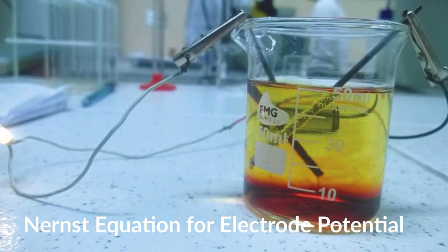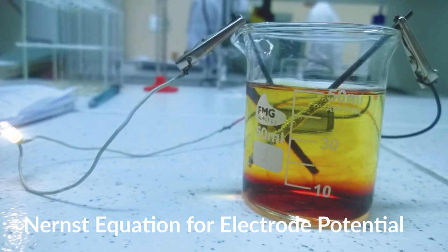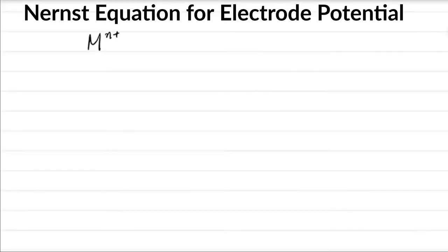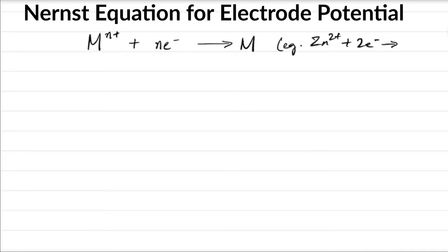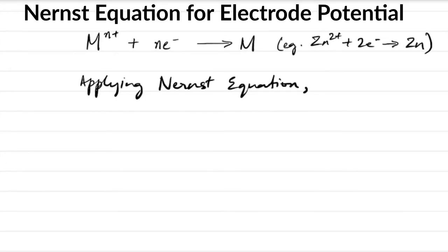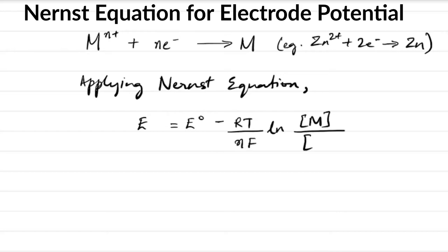In general, for a general reduction reaction: M⁽ⁿ⁺⁾ plus n electrons gives the metal M. By applying the Nernst equation we get: E = E° − (RT/nF) log([M]/[M^(n+)]).